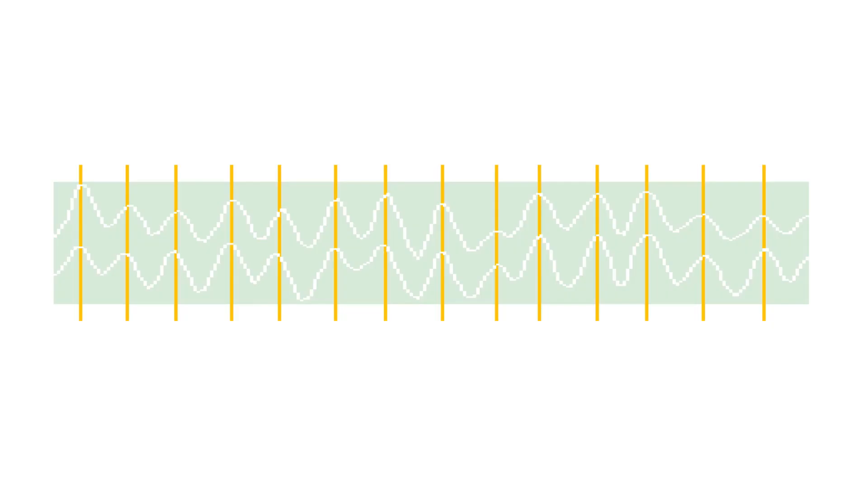Two parameters determine the length of the alpha waves: the number of highly active columns and the duration of high activity. In short, number and duration. The length of the alpha waves varies, and there are patterns in the variation. Analysis of such patterns makes it possible to measure the number and duration.